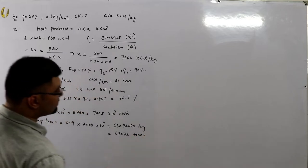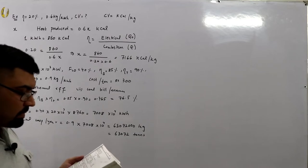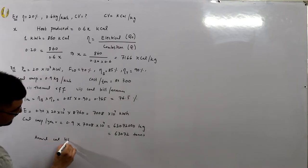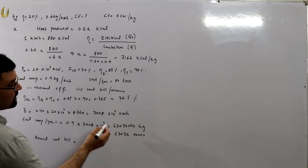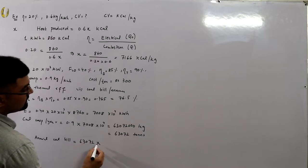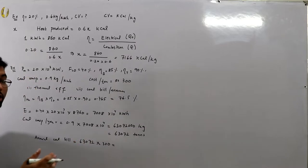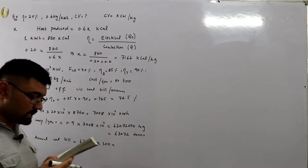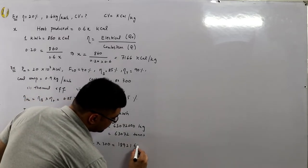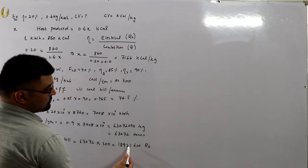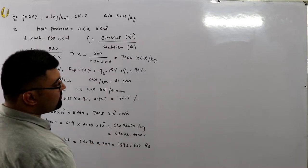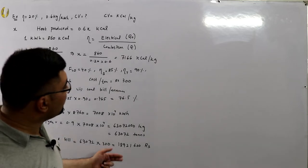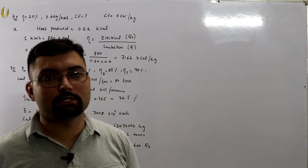That is equivalent to 63,072 tons of coal. The annual coal bill = 63,072 tons × Rs. 300 per ton = Rs. 18,921,600 — approximately 18 to 20 million rupees. The instructor notes that at today's price of around Rs. 25,000 per ton, this would be a much larger figure, implying a huge amount of financial discrepancy.